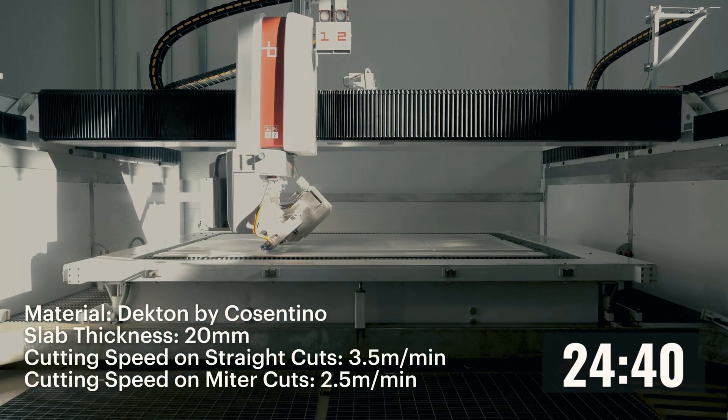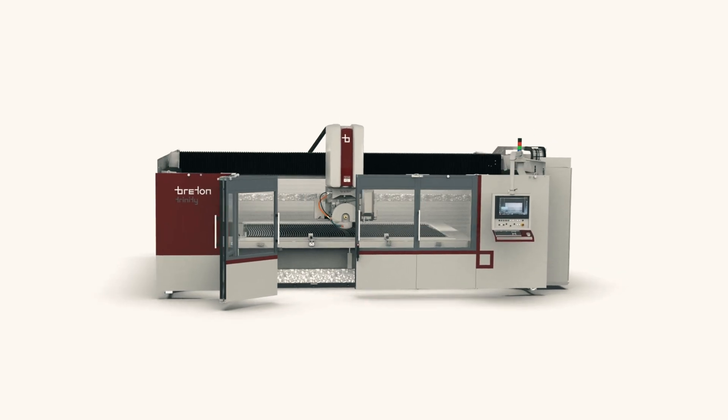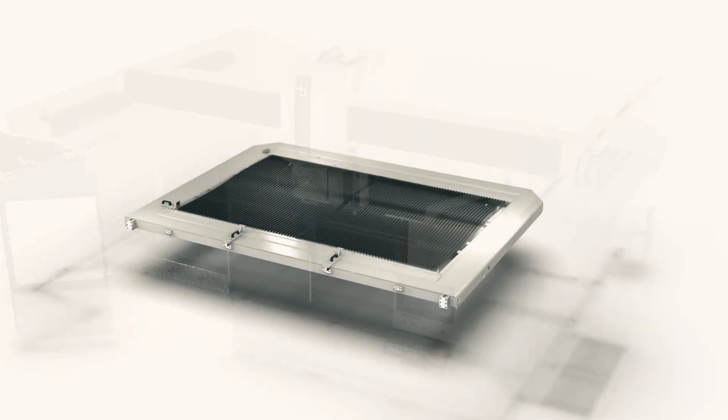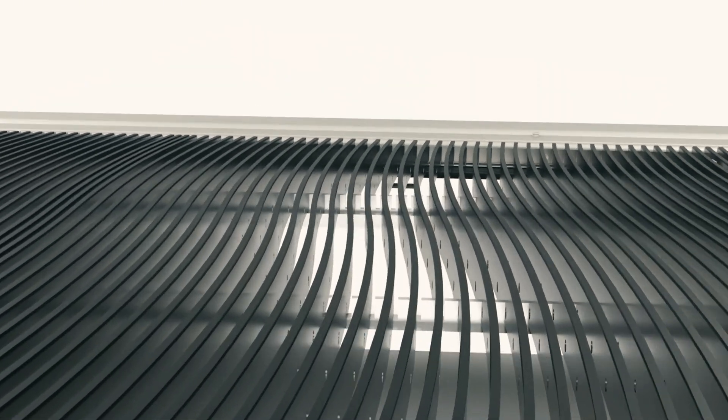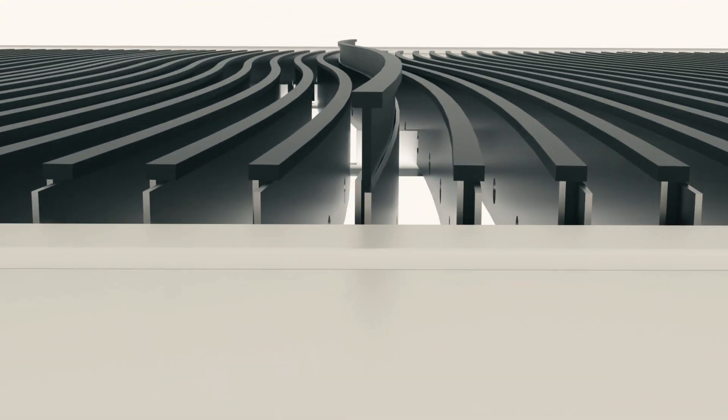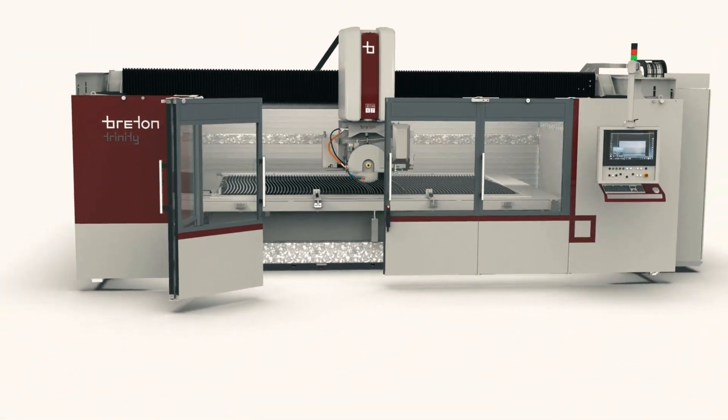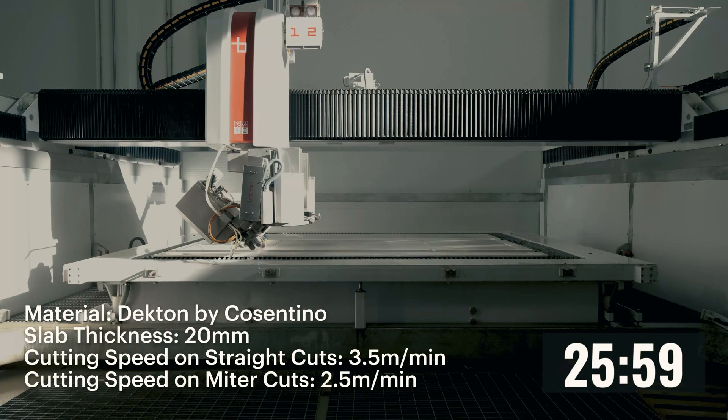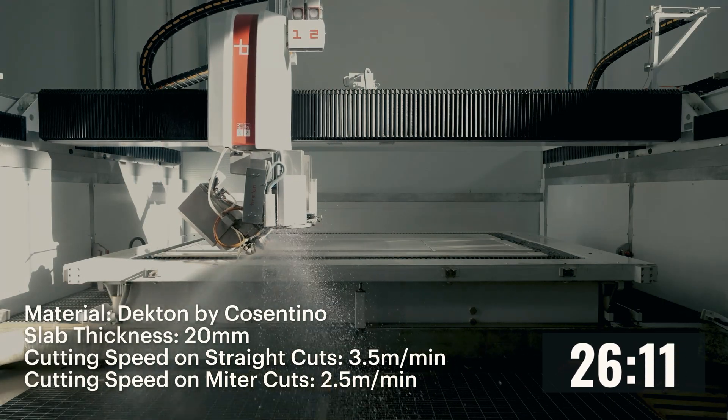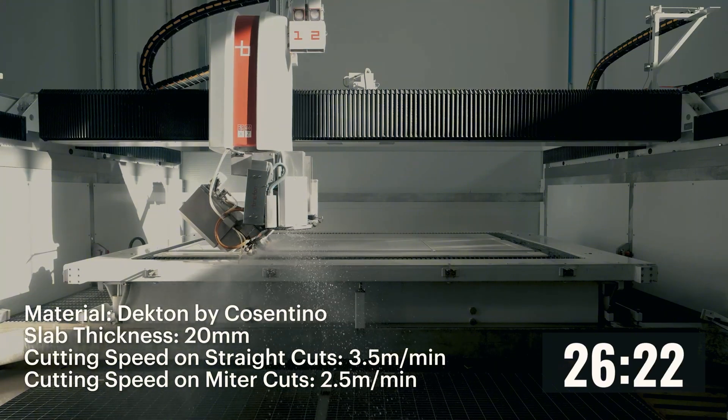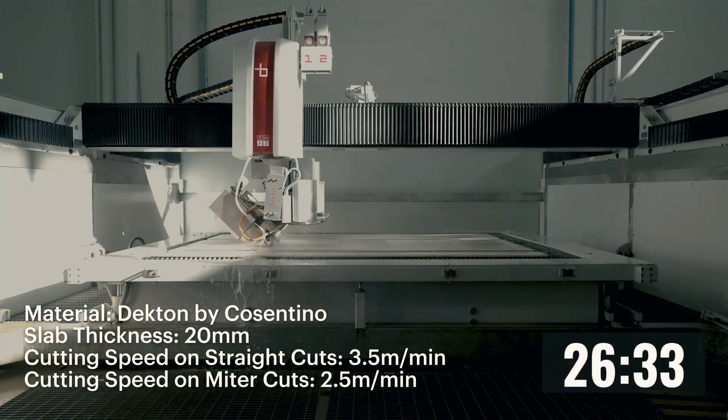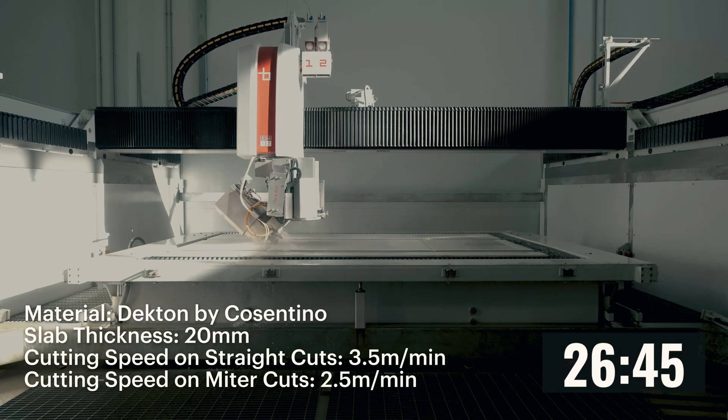Breton designed a new work table consisting of galvanized steel blades covered with T-shape high-friction rubber profiles to increase grip on the slab during the cutting phase. The rubber profiles are easily replaceable to ensure a consistently perfect cutting surface. Even in this case, Sapiens takes care of everything, automatically adjusting the machine settings based on the material on the table.